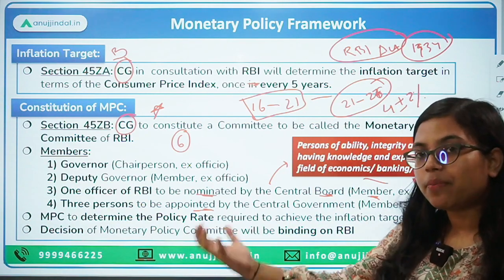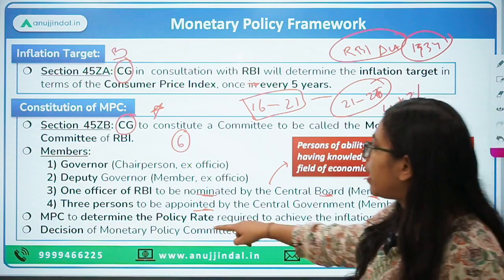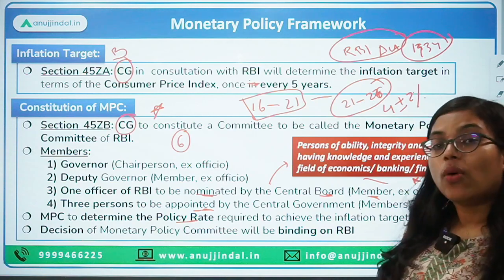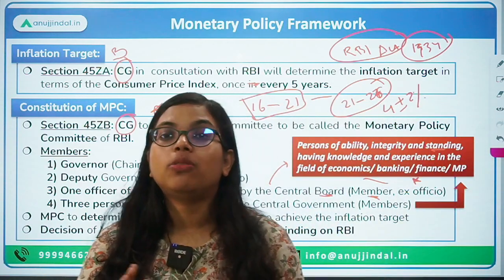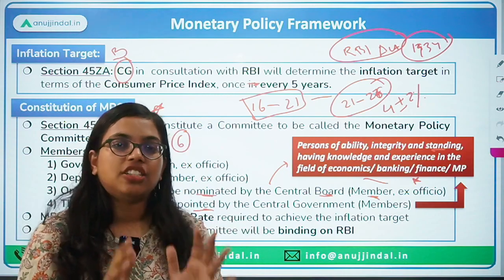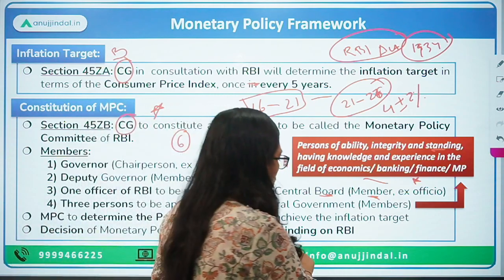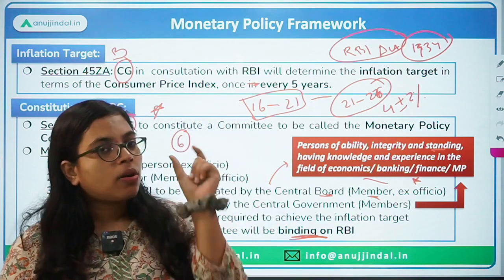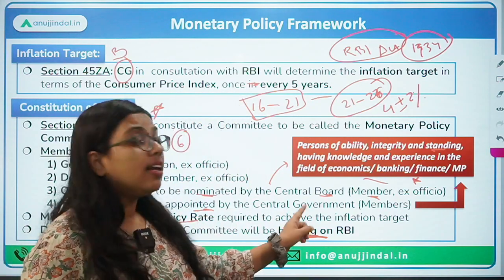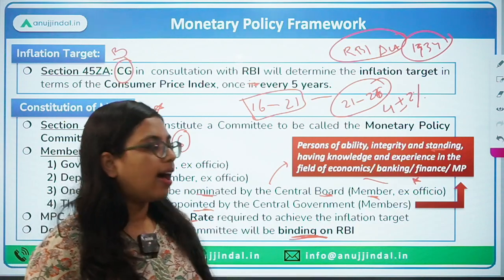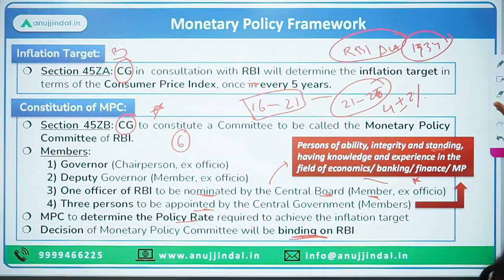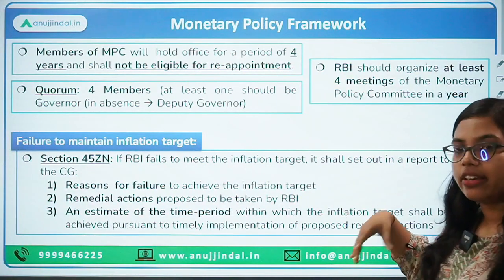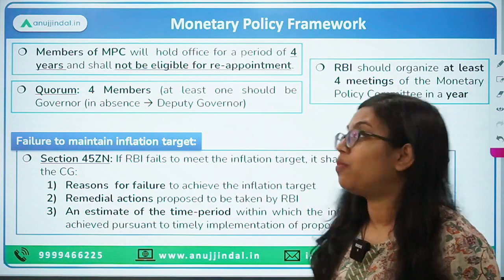The work of the MPC is to determine the policy rate in order to achieve the inflation target. Whatever decision is taken by the Monetary Policy Committee, all such decisions will be binding on RBI. So whatever policy rate the MPC decides must be taken as-is by RBI.